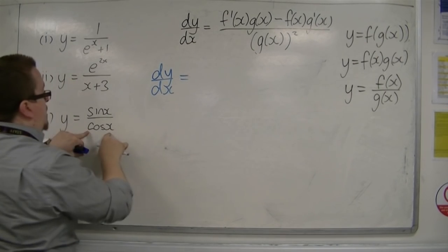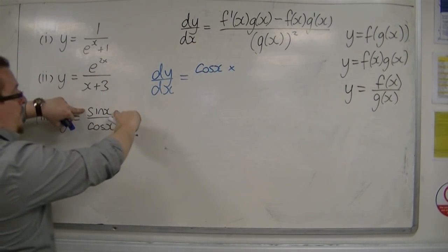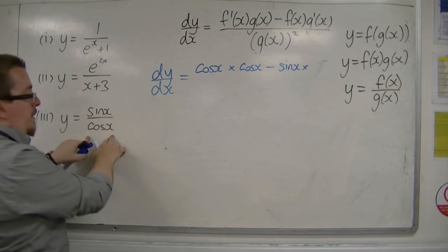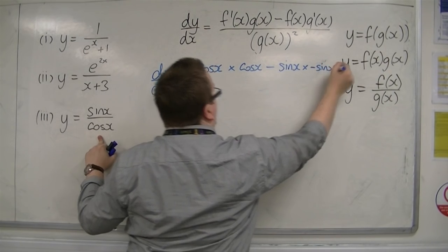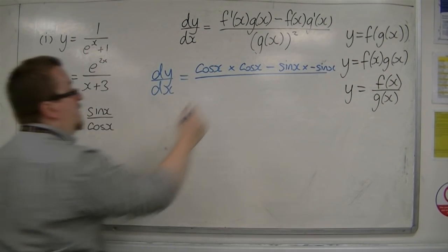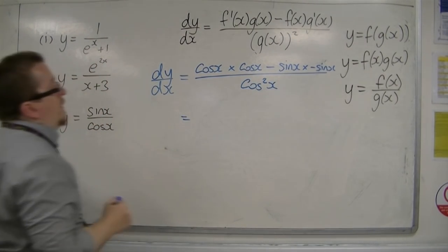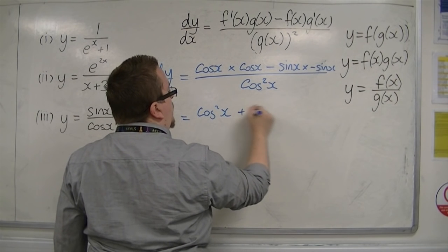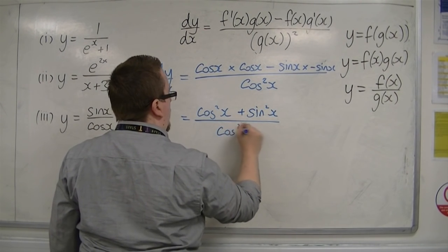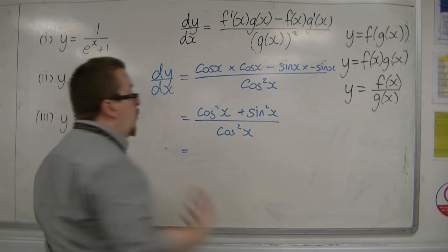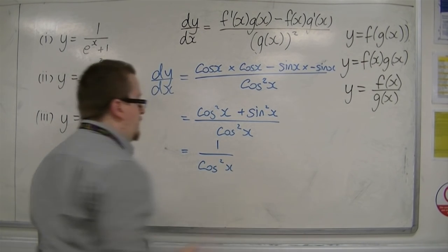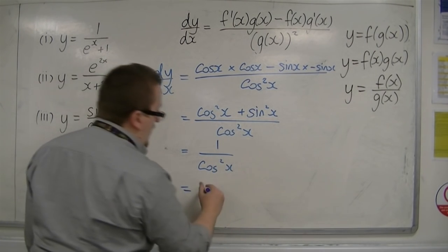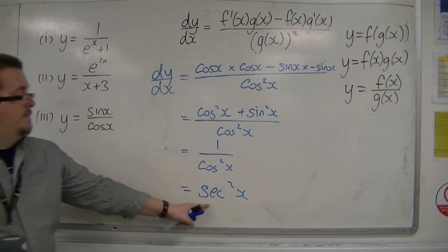So dy by dx equals the bottom, cos x, times the derivative of the top, which is cos x. Take away the top, sine x, times the derivative of the bottom, which is minus sine x. All over the bottom squared, cos squared x. On the top we have cos squared x, and minus sine x times minus sine x gives plus sine squared x. So we have cos squared plus sine squared on the top, which equals 1. So the result is 1 over cos squared x, and since 1 over cos is sec, the derivative of tan x is sec squared x.